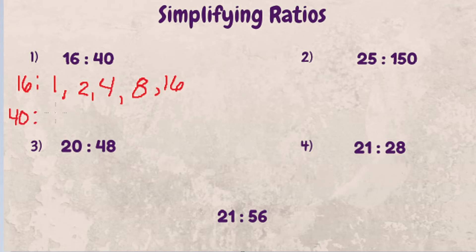For 40, we have 1 times 40, 2 times 20, 4 times 10, and 5 times 8. It's a little squished there, but you can see 8 is common in both of them, and that's the largest number common. So that's the greatest common factor.